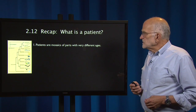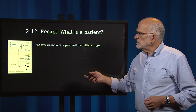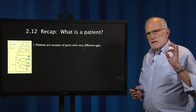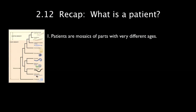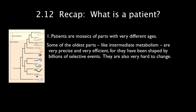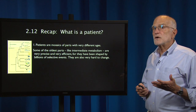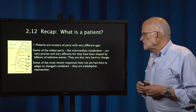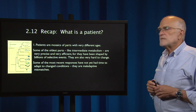Patients are mosaics of parts that have very different ages. On the left you see the illustration showing when the transposon inserted into the protoimmunoglobulin gene to make possible the vertebrate adaptive immune system — that happened about 500 million years ago. Some of the very oldest parts, like intermediate metabolism, are precise and efficient because they have been shaped by billions of selective events. They are also very hard to change. Some of the most recent responses have not yet had time to adapt to changed conditions, and so they are maladaptive mismatches.